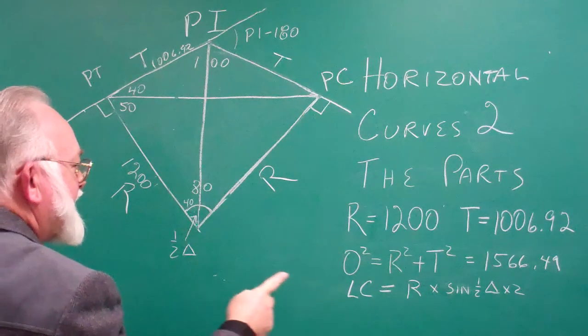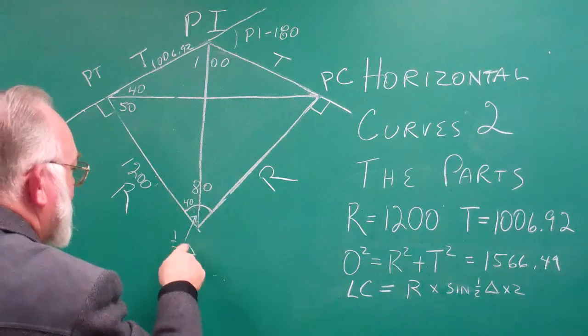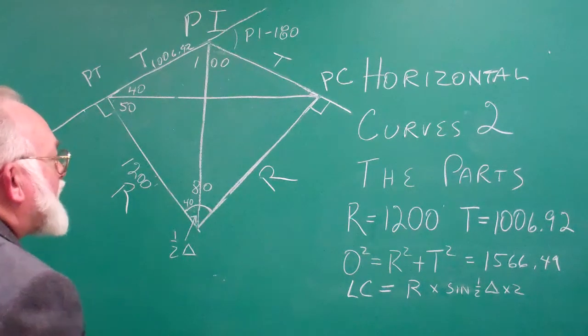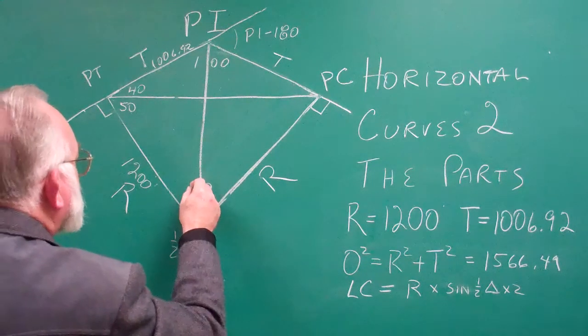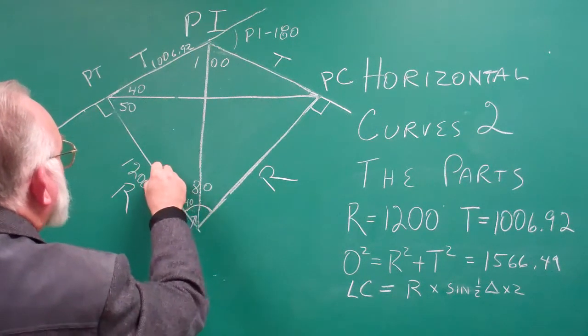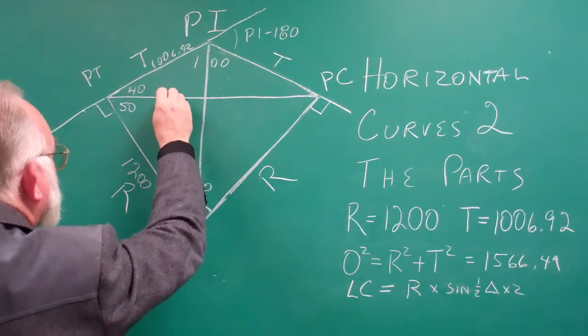It's 1200 times the sine of one-half delta, 40, times 2. Why are we using that? Because we know this distance and we know that figure, and this is the hypotenuse and that's the opposite.